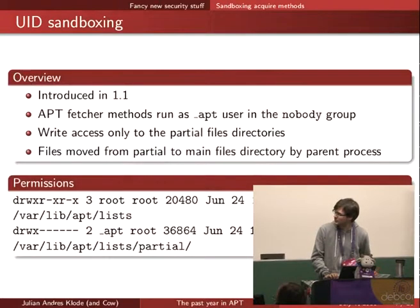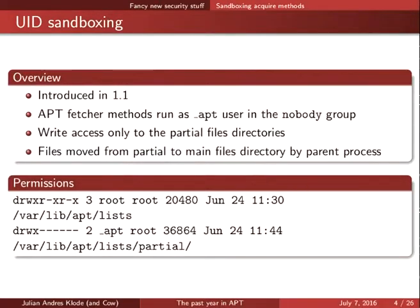What we did in apt 1.1 was we changed the user the methods run as from root to the underscore apt user and the nobody group, and we gave that user write access only to the partial files directory, so it couldn't write anywhere else on the system, or read any home data or configuration data that it is not permitted to read.